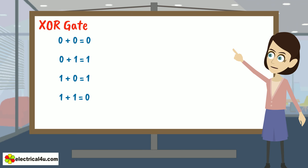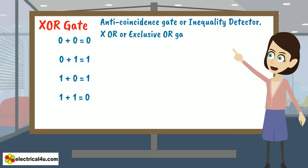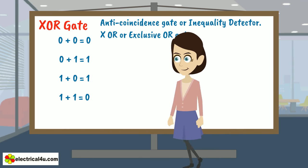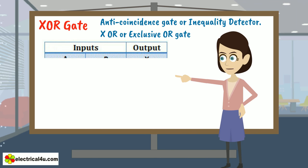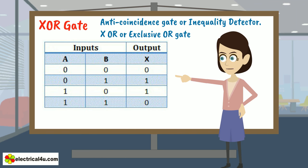This is the reason an XOR gate is also called anti-coincidence gate or inequality detector. This gate is called XOR or exclusive OR gate because its output is only 1 when one of its input is exclusively 1. The truth table of XOR gate is shown here.